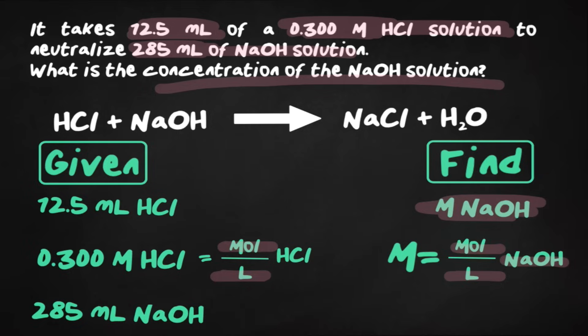A lot of times, students don't know where to start. So my trick for you is whatever you are not looking for, that's what you're going to start with. So since we're looking for molarity of NaOH, we're going to start with HCl. So we're going to start with the milliliters of HCl and then make our way to moles of NaOH.